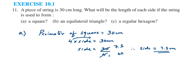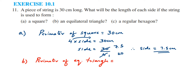Now for the second problem: the equilateral triangle. Perimeter of equilateral triangle = 30 cm. Since in an equilateral triangle all sides are equal, instead of adding side + side + side, the perimeter formula becomes 3 × side. So 3 × side = 30 cm.